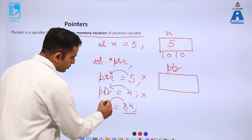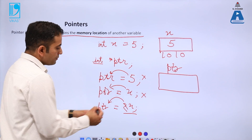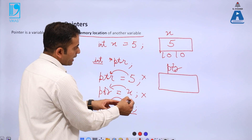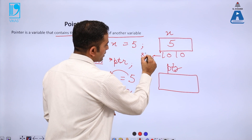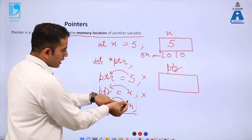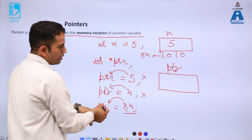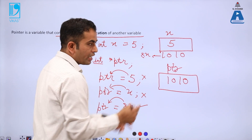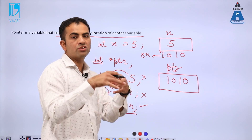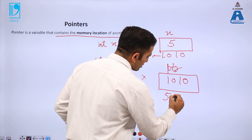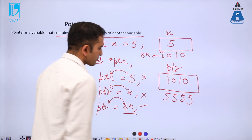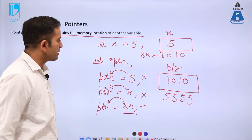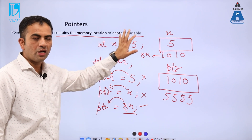Now if we write &x assigned to ptr — &x means the address or location of variable x. So &x gives the address 1010, which we assign to ptr. The value of ptr becomes 1010. This ptr variable of pointer type also has its own address, say 5555. This is the pictorial representation: a pointer contains the memory location of another variable.